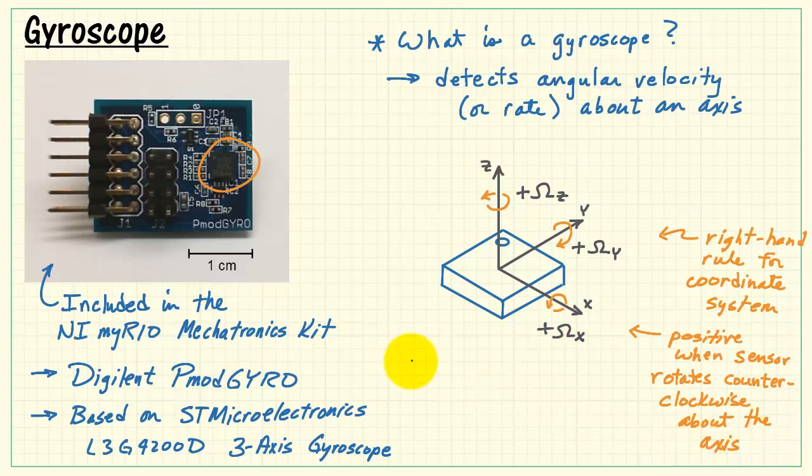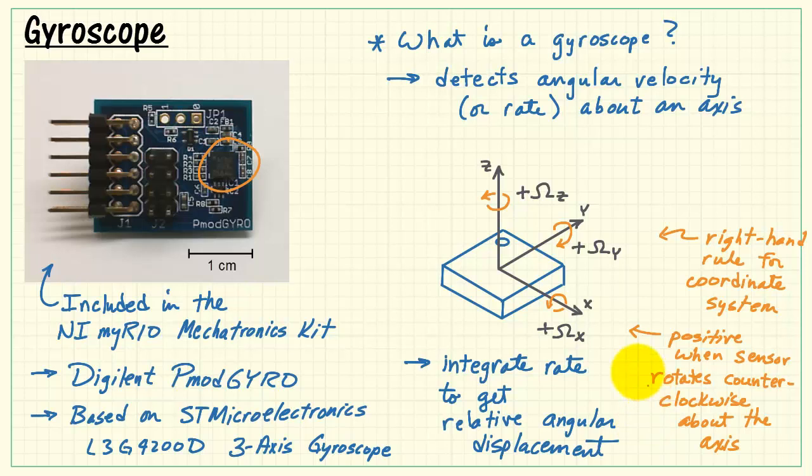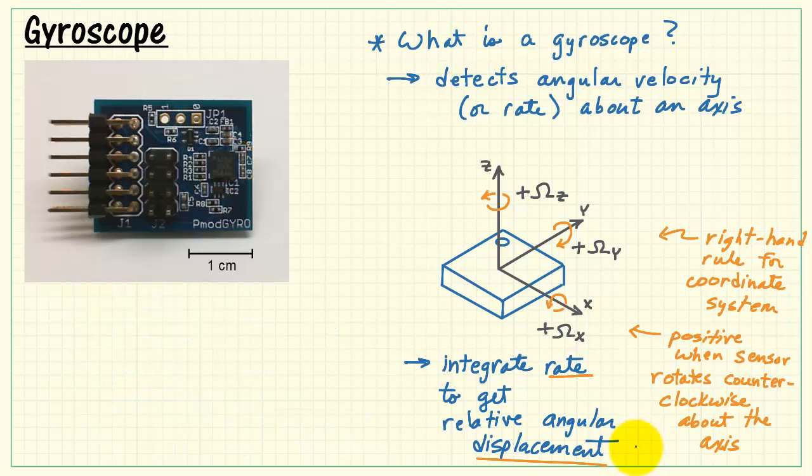It indicates a positive value when the sensor rotates counterclockwise about the axis. We can then integrate this rate to get relative angular displacement, and in this way we can know the orientation of the gyroscope.